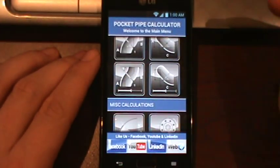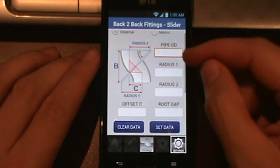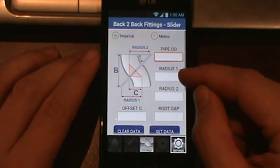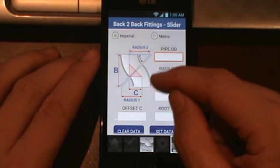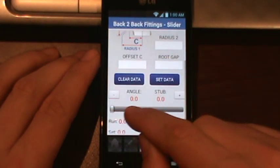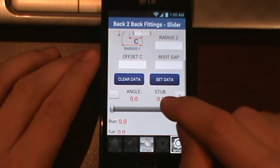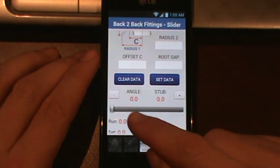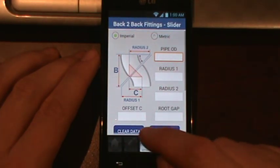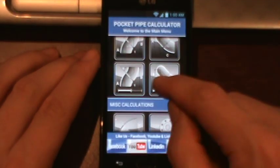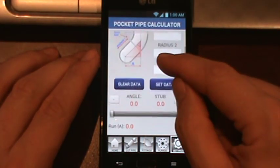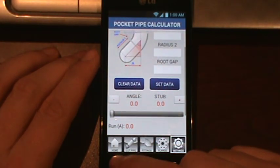We also have a slider. This is a more hands-on approach. You would enter in your pipe OD, the radius of the first fitting, the radius of the second fitting, root gap, and your C value. And you just move the slider until your stud piece is zero and that will tell you the angle of the fitting that you need. More hands-on approach. Some people might like that better. It's the same way with the 90 into the odd angle. Same approach there.